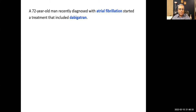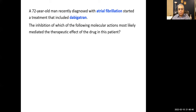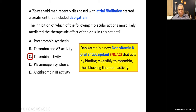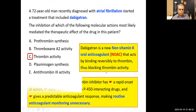Question: A 72-year-old man recently diagnosed with atrial fibrillation started dabigatran. The inhibition of which molecular target mediates the therapeutic effect? Answer C — thrombin. All other NOAC drugs block factor Xa; dabigatran is the only one blocking thrombin activity. It is an oral direct thrombin inhibitor with rapid onset of action, unlike warfarin which takes 3 to 4 days. It does not interact with P450-metabolized drugs and gives a predictable anticoagulant response, making routine monitoring unnecessary.